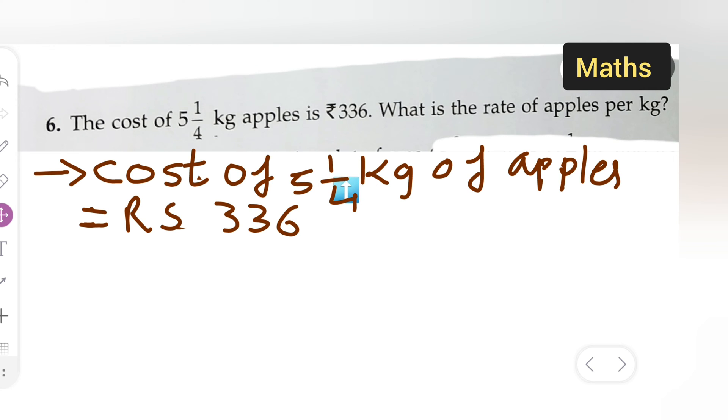Next, I can write down the cost of 1 kg, because we need to find out the cost of 1 kg. Cost of 1 kg, per kg means 1 kg, so 1 kg is equal to...